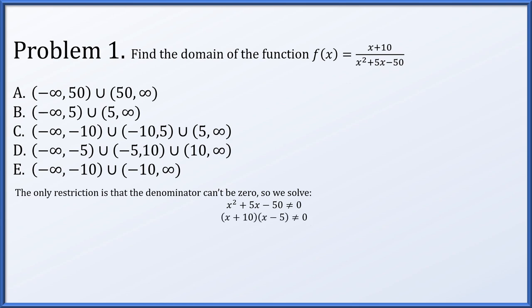This factors as (x plus 10)(x minus 5). If this product is not zero, then neither factor can be zero — in other words, x cannot be negative 10 and it cannot be 5. As intervals, that is option C: all real numbers but specifically excluding negative 10 and 5.